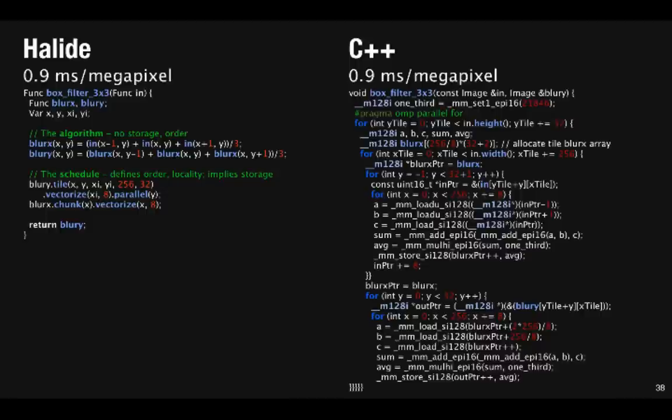This generates nearly identical machine code to the C++, but with just two lines each of algorithm and schedule. And unlike the C, the Halide version makes it easy to add new stages, change the computation, or change the schedule. It can also compile fast ARM NEON code, and with a few tweaks to the schedule we can get a GPU implementation.